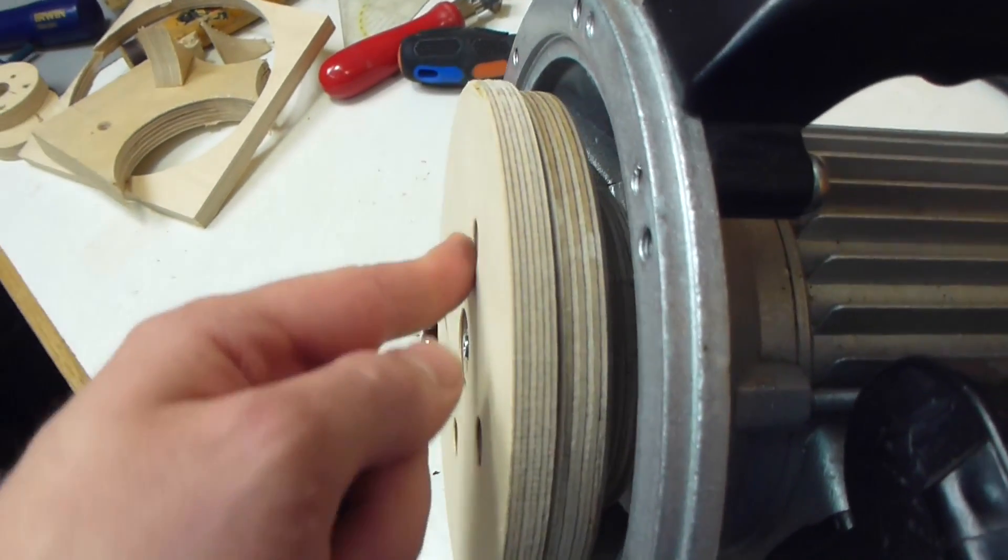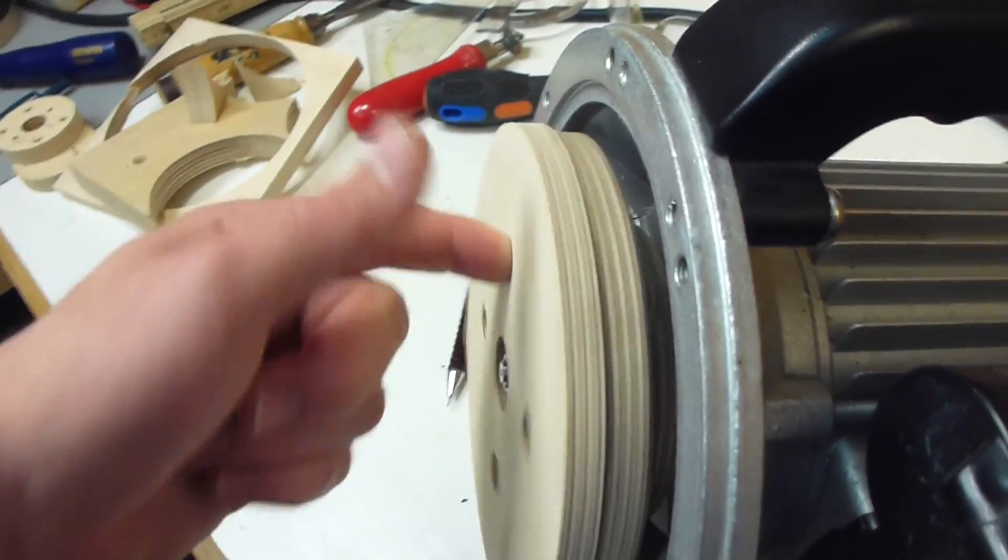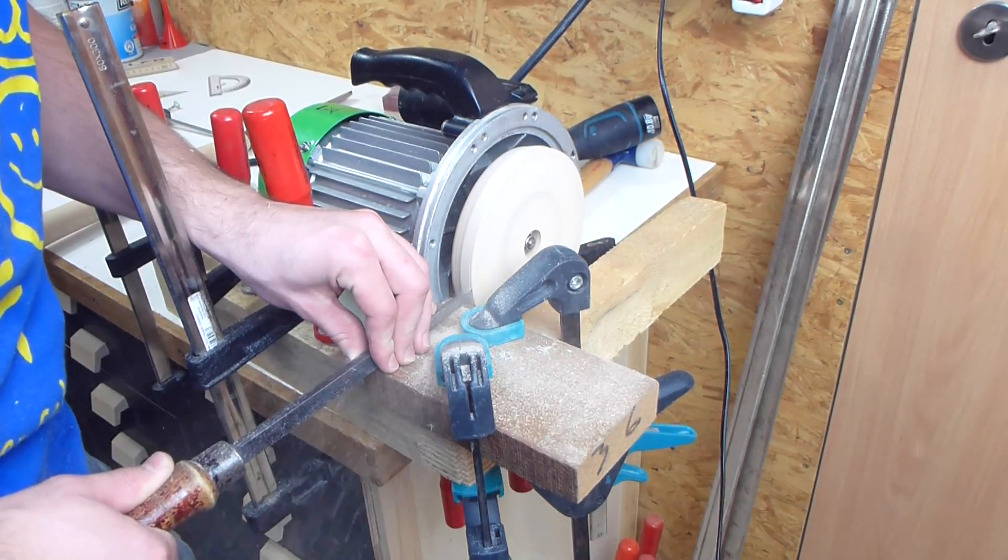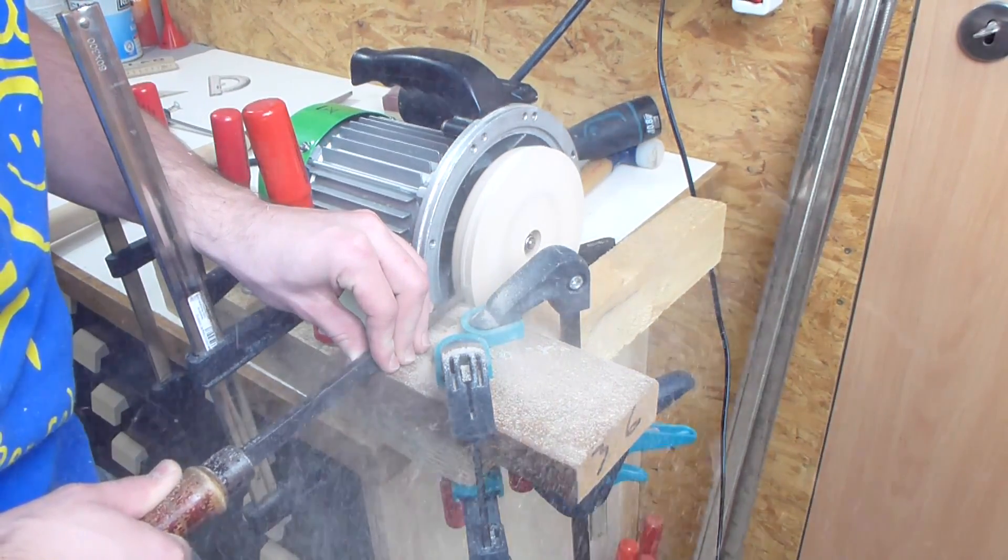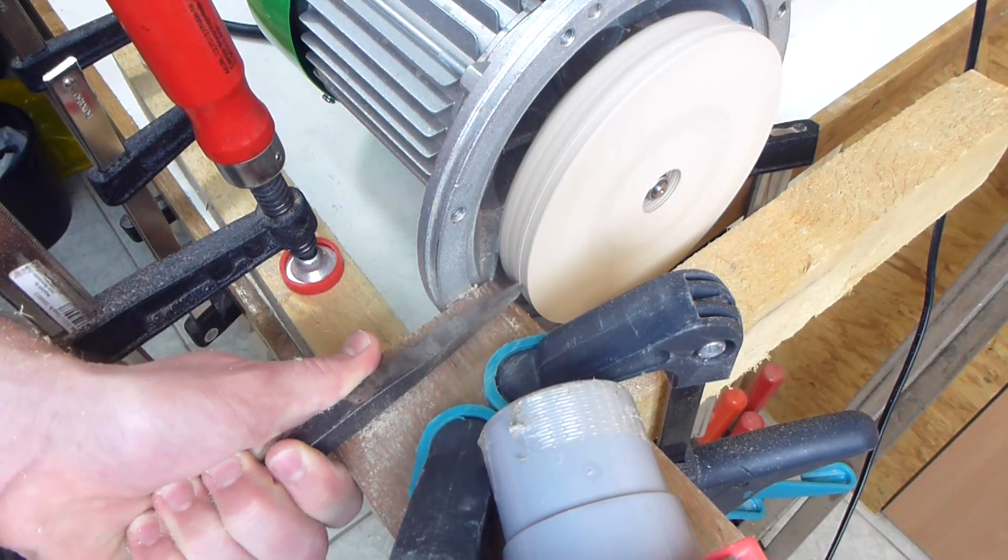This flange now has quite a bit of wobble but that's totally fine because now I will turn it true. The setup for turning is really simple - everything is just clamped down and works like a lathe. As this piece spins quite fast you should make only light cuts.